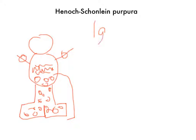This all stems from IgA immune complexes. Basically, you get an upper respiratory infection, and then you get immune complexes against those antigens. It's IgA because it's in the respiratory tract and along your gut lining. All of these symptoms are due to IgA deposition.